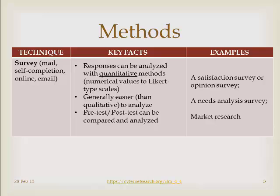There are three main methods we're going to talk about today. The first is surveys, which you're quite familiar with. Surveys can be done by post, completed voluntarily, online, or through emails — there are many ways of distributing them. A key fact of survey-type data collection is that responses can be analyzed with quantitative methods, meaning numbers, percentages, and numerical values on Likert-type scales. It's also generally easier to analyze compared to qualitative data.